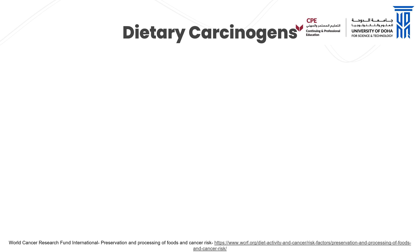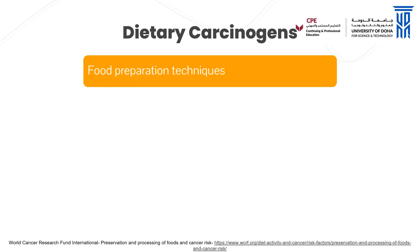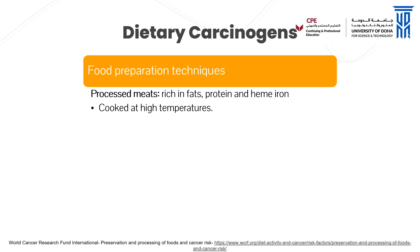Animal foods such as meat and fish may be processed before consumption by smoking, curing, salting, or by adding preservatives to enhance flavors or prolong shelf life. These meats are also cooked at high temperatures, and these combined methods of processing and preparation may affect the chemical composition and nutritional value of these foods. Red and processed meats increase the risk of colorectal cancer; Cantonese-style salted fish increases the risk of nasopharyngeal cancer; and foods preserved by salting increases the risk of stomach cancer. Now, processed meat is invariably higher in fat content than red meat.